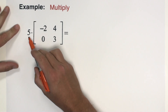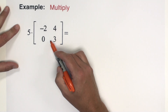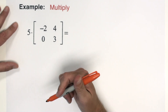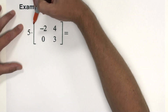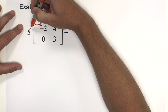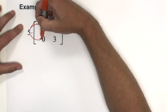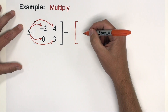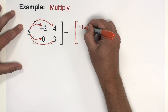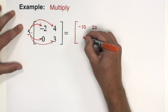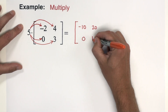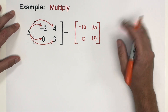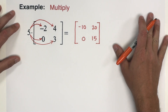In this first example, we have five multiplied by a two by two matrix. We don't have to check sizes here since there's just a single matrix. We simply take the scalar five and multiply it to every entry within the matrix. Five times negative two is negative 10, five times four is 20, five times zero is zero, and five times three is 15. Simple as that — very intuitive.